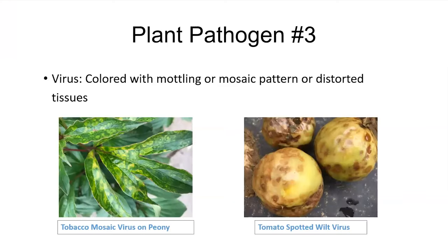The third one is virus. The symptoms are very visible, normally colored with mottling or mosaic pattern, or distorted tissues. Here are two examples: the tobacco mosaic virus on petunia, which I received a sample of last year.